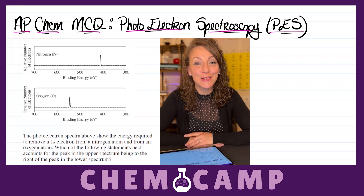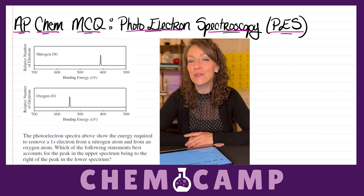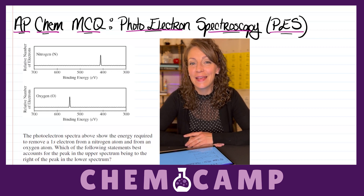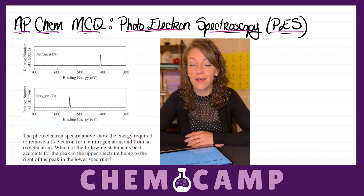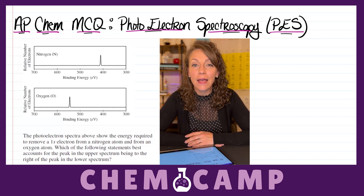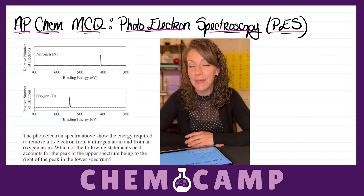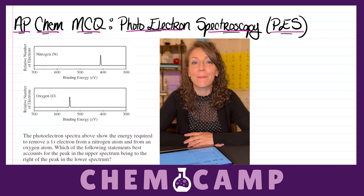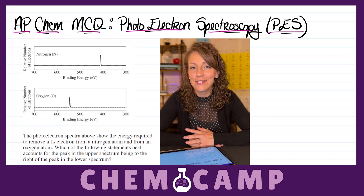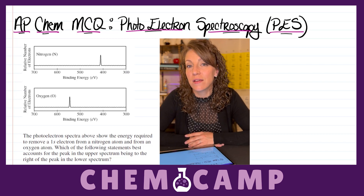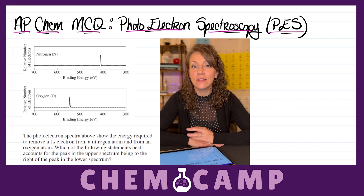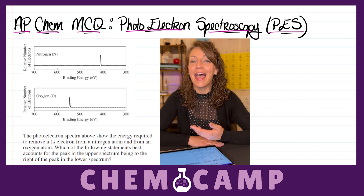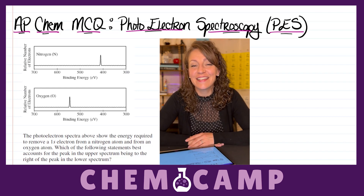Hi there, welcome to Chem Chem. I'm Mrs. Newman and I've got an AP Chem multiple-choice question dealing with photoelectron spectroscopy, or PES for short. This is a fairly new concept on the College Board exam. When they switched over to a data-driven exam, they introduced this concept because it allows them to provide data about binding energy or ionization energy and connect it to electron configurations. They love giving students data to analyze, draw conclusions from, and then answer a question. So let's learn a little chemistry.